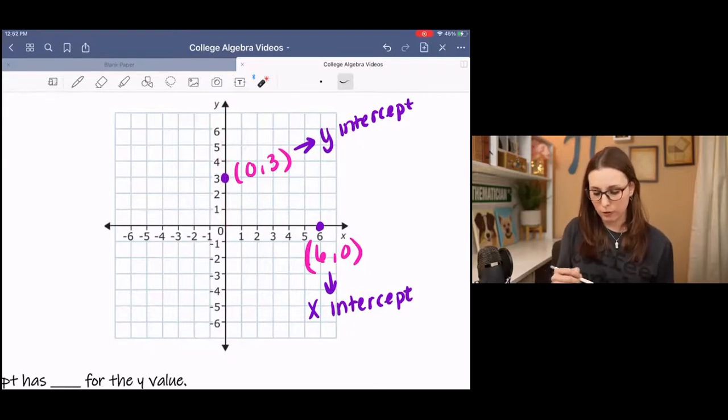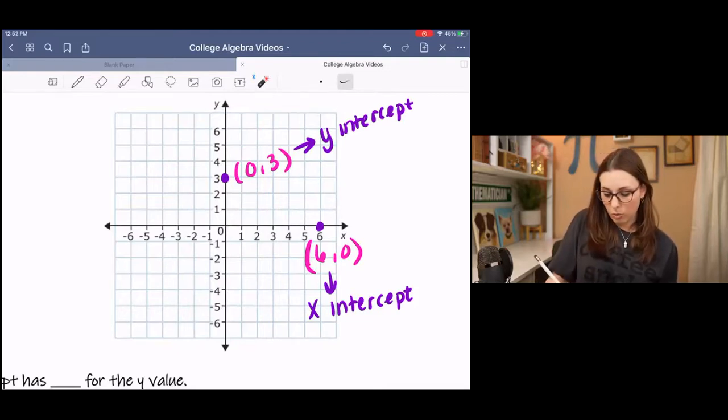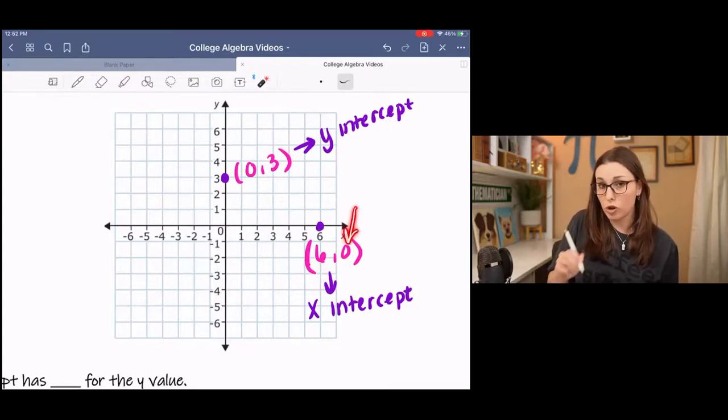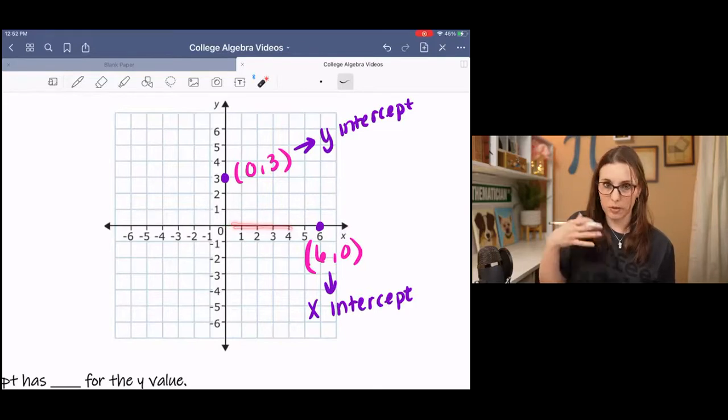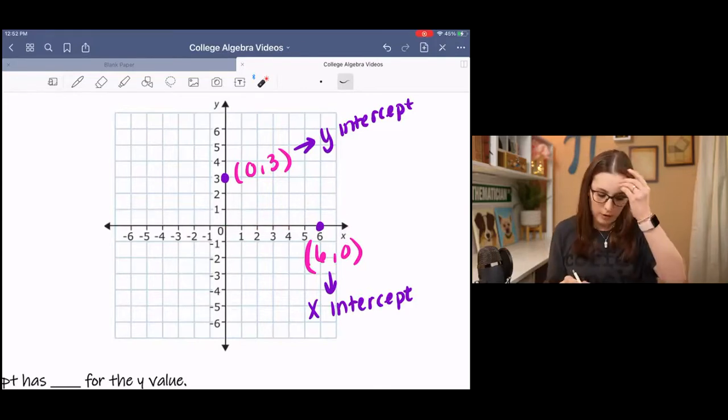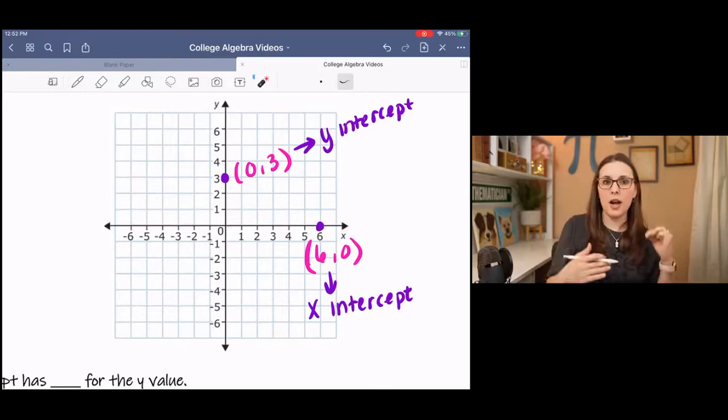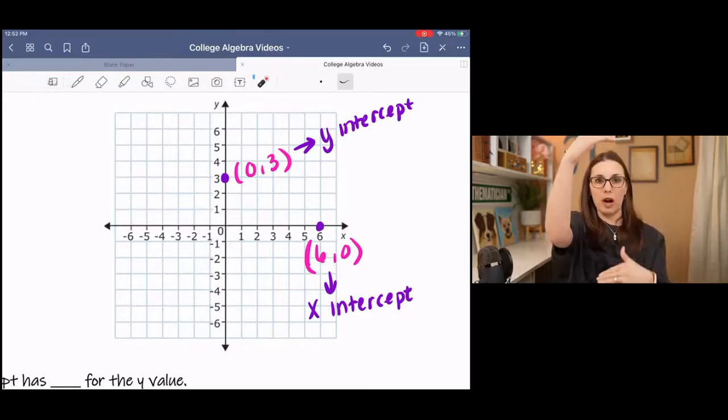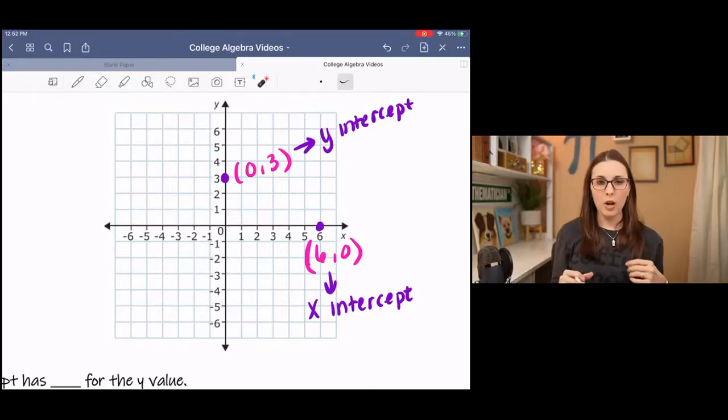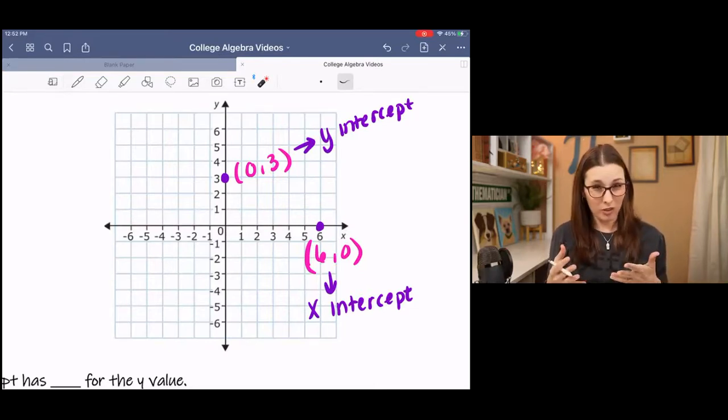And then for the x-intercept, since it's on the x-axis, it has no height. So your x-value might be different depending on the point you picked, but your y-value should be 0 because you can go over 1 up 0, over 2 up 0, over 3 up 0, over 4 up 0, and so on, no matter what you picked, even if it's negative. Because it doesn't go up or down, it doesn't have that rise or fall, which makes it 0. And we're going to use that key fact to help us find x and y-intercepts when maybe you aren't given a graph.